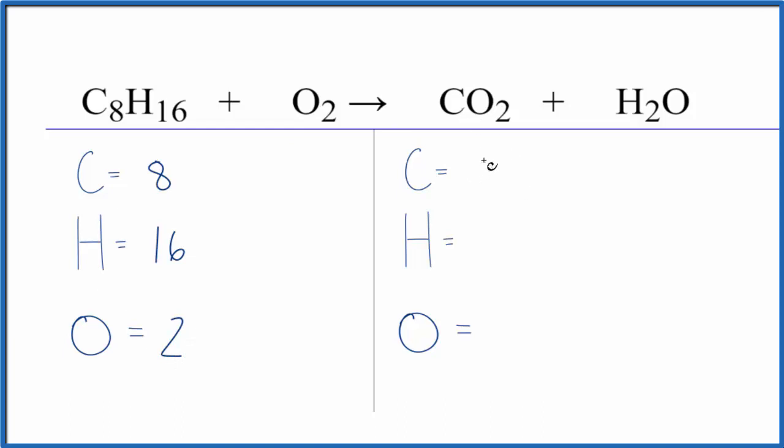On the product side, we have 1 carbon, 2 hydrogens, and then 2 oxygens, plus we have 1 oxygen here. Make sure you count that. So 3 total oxygens on the product side.